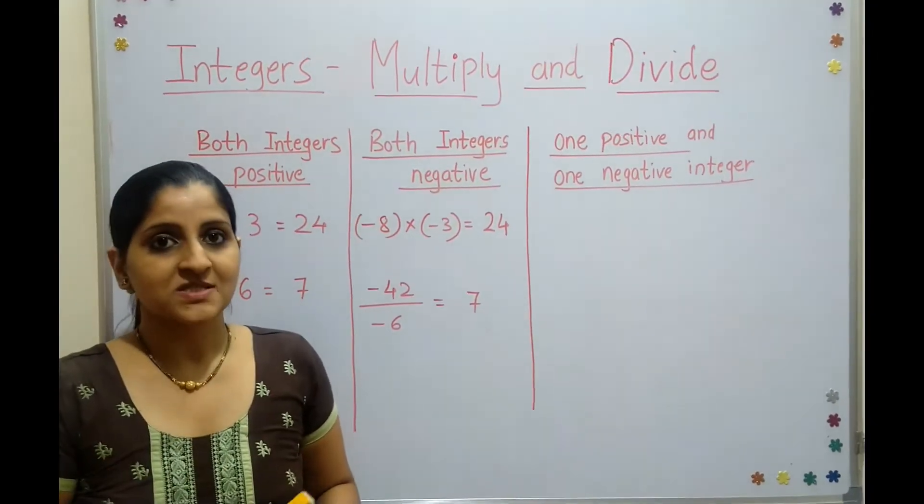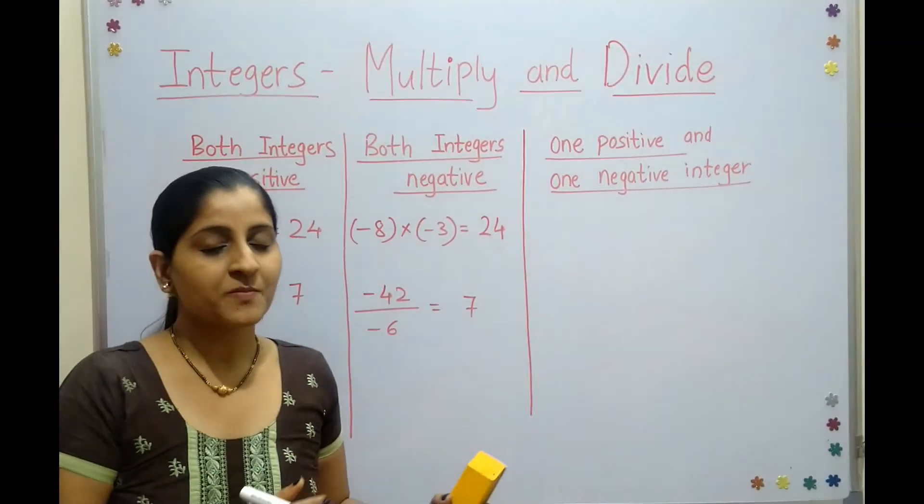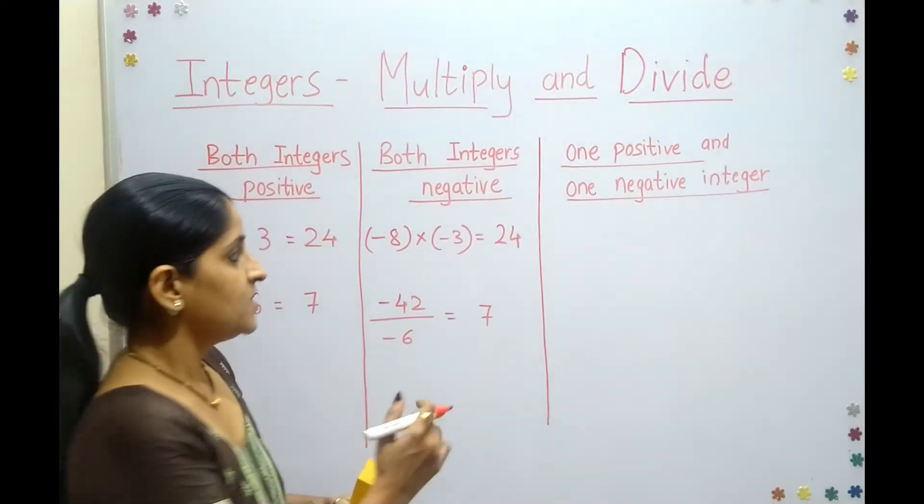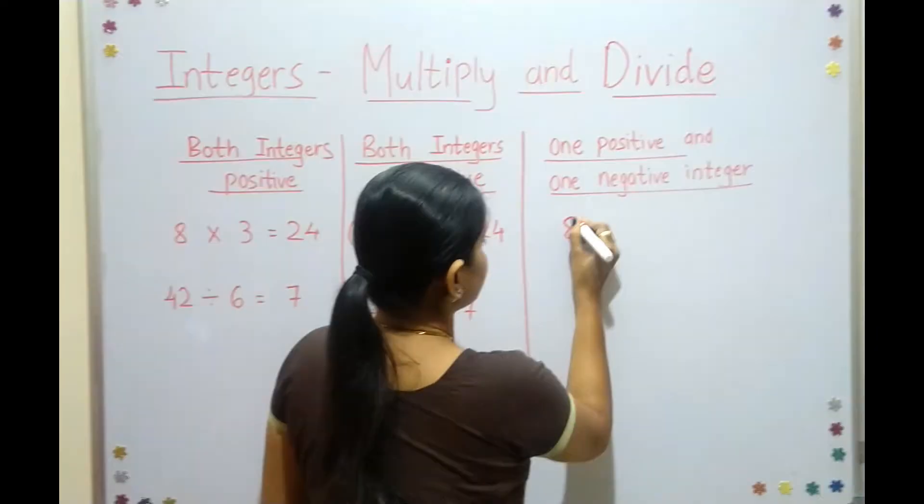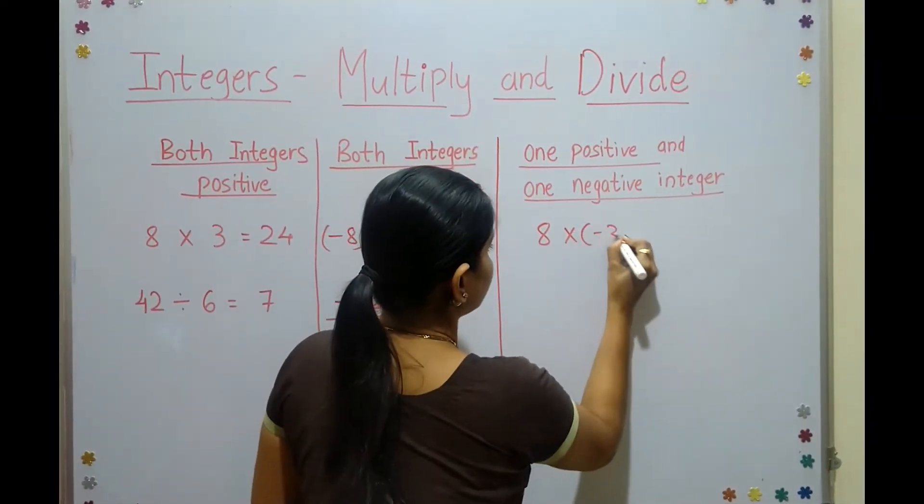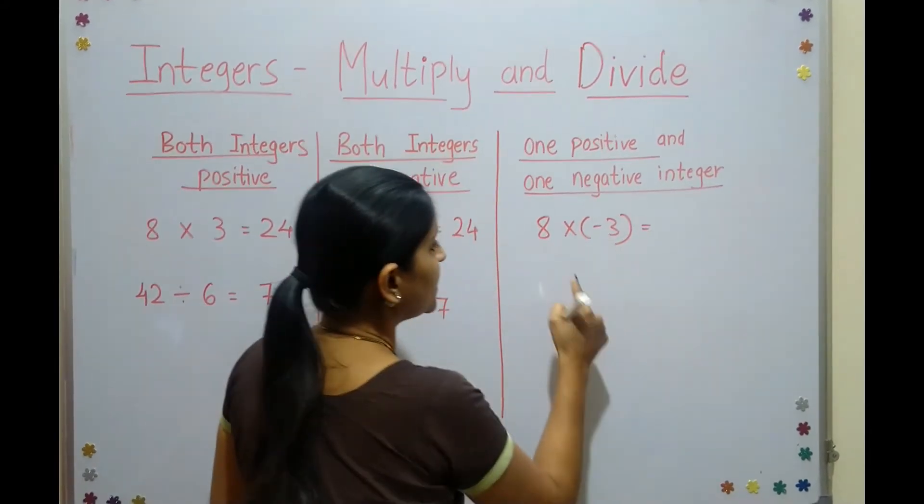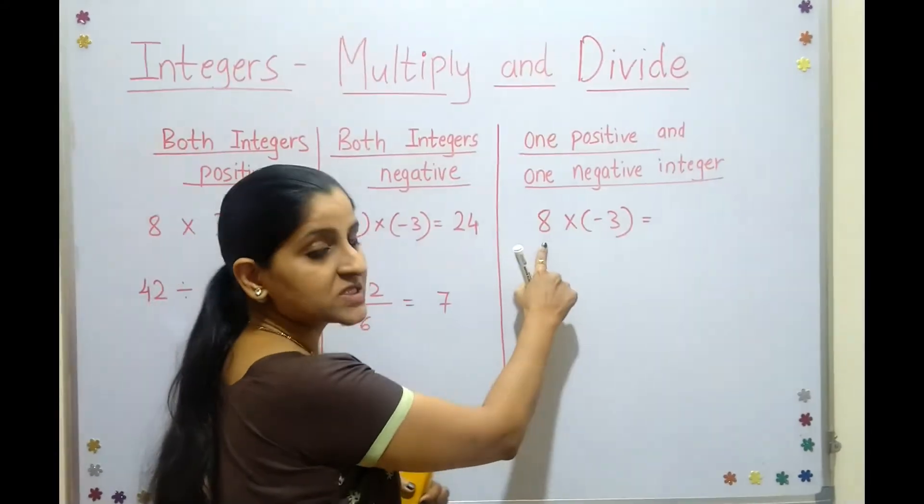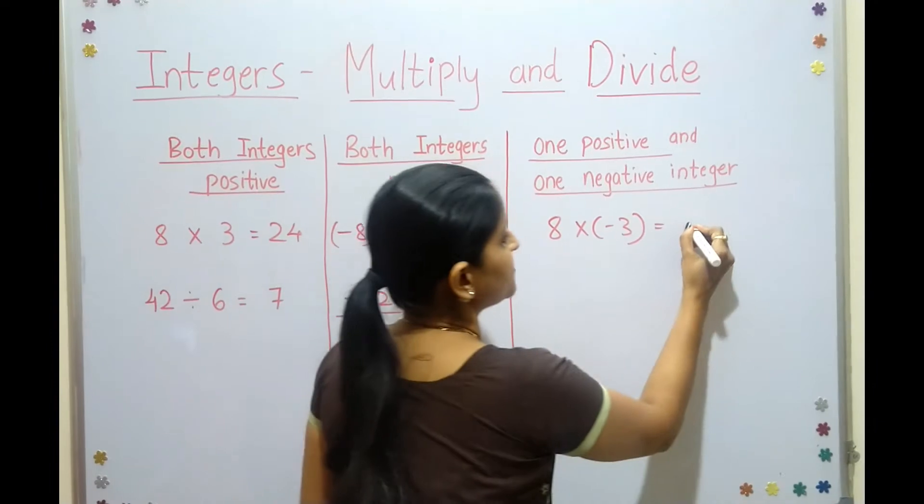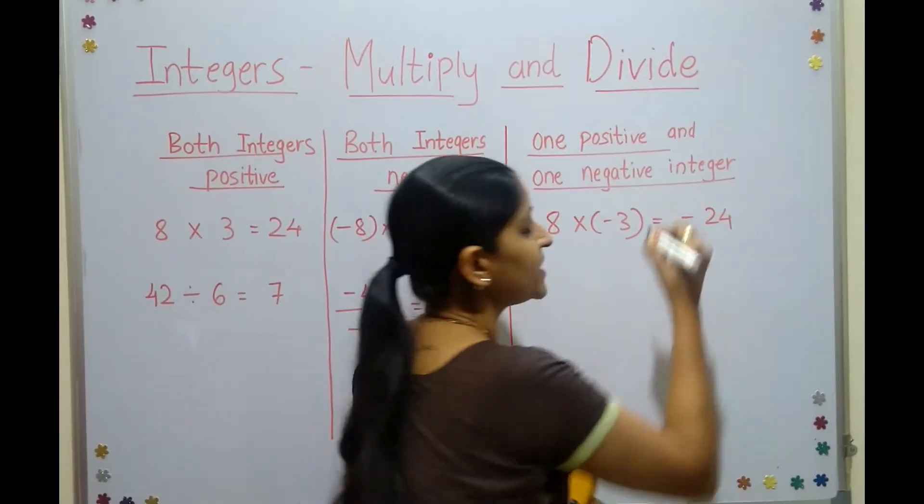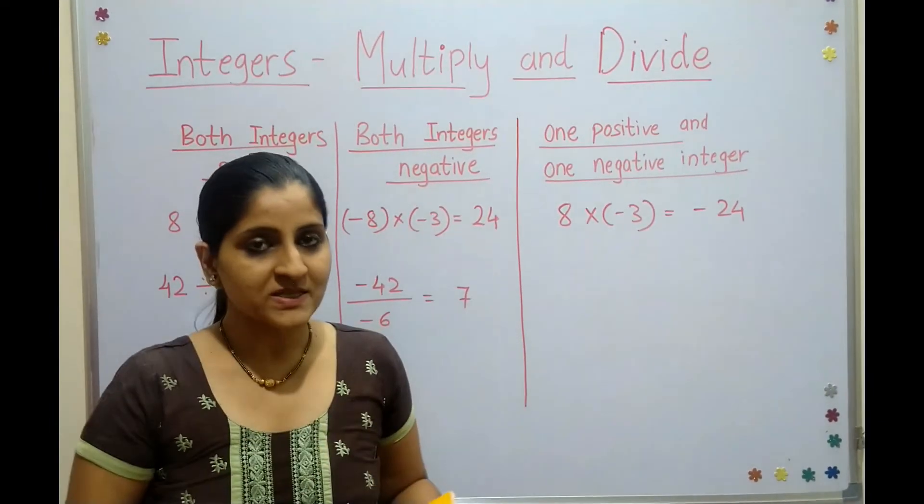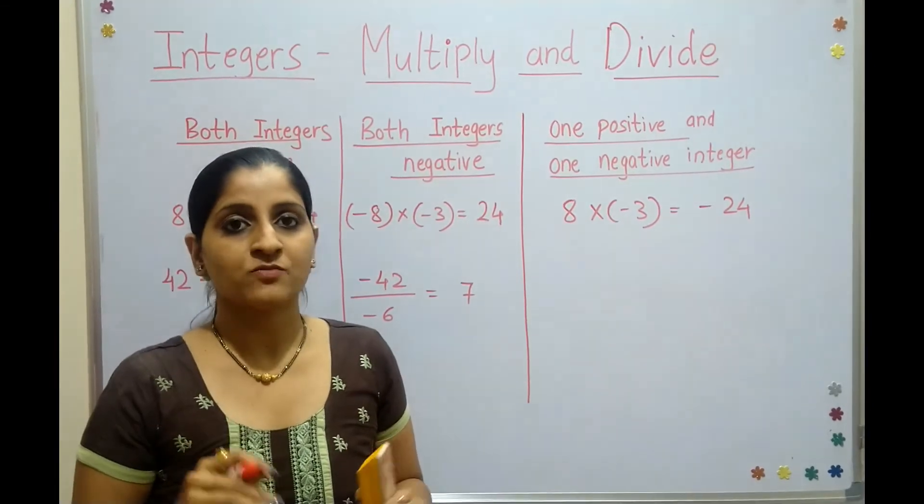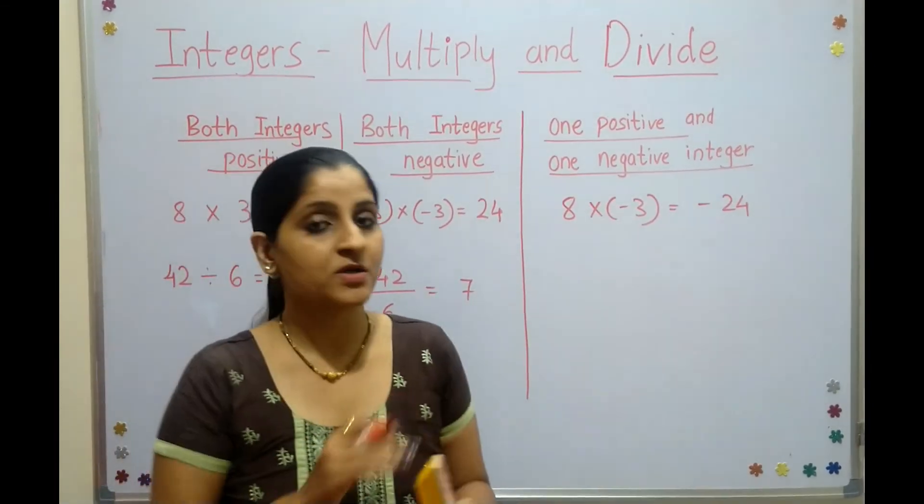Now, what happens when there's one positive and one negative number? Let's look at 8 multiplied by negative 3. When one integer is positive and the other is negative, the answer is always negative. I don't need to consider which number is greater or smaller—the answer is always negative.